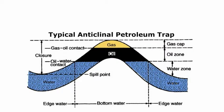A reservoir rock sealed by a cap rock in the position of a geological high — that is, the anticline — is known as a structural petroleum trap. Stratigraphic traps are also known and occur in various fields. In all cases, changes in permeability and porosity determine the location of oil and/or gas accumulations, which may be several miles in length.